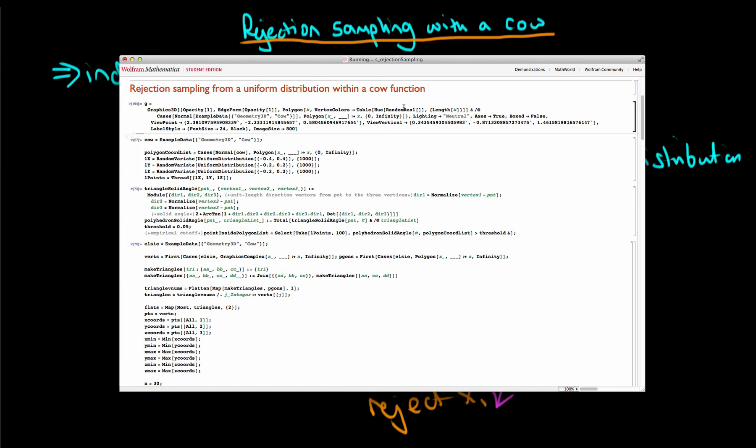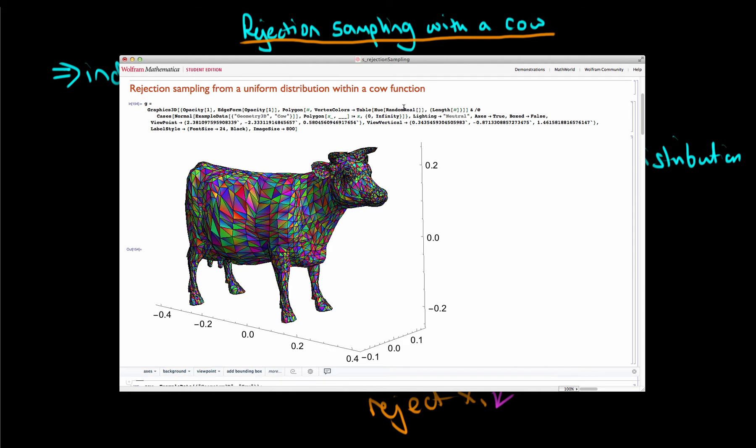Now I'm going to draw the boundaries of this distribution, and as the function's name suggests, this actually is a cow distribution. It looks like a cow.